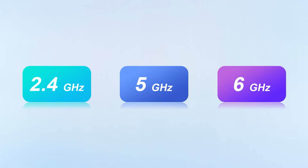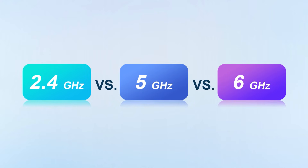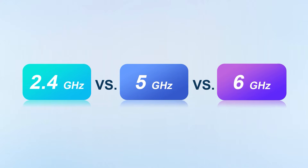Currently, the main frequency bands running on your network are 2.4 GHz, 5 GHz, and 6 GHz. So what is the difference between them?